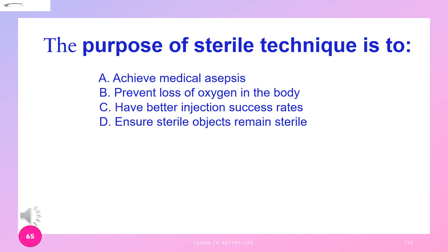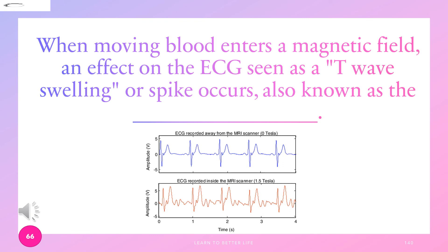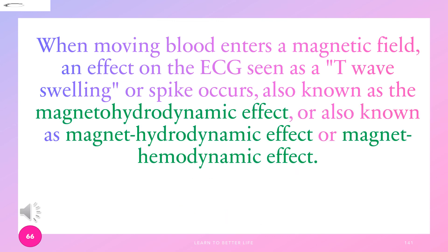What is the purpose of sterile technique? The purpose is to ensure sterile objects remain sterile. When moving blood enters a magnetic field, an effect on the ECG is seen — a T-wave swelling or spike occurs, also known as the magnetohydrodynamic effect.